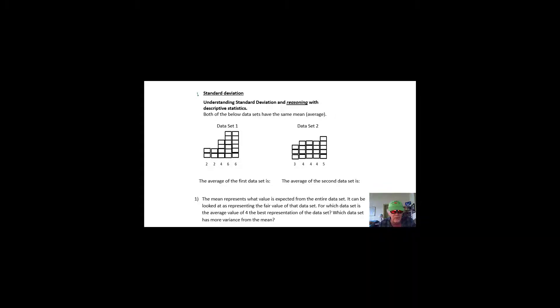Standard deviation — we're going to try to understand what it means. We have two data sets that both have the same average. To find the average of data set one: 2 plus 2 plus 4 plus 6 plus 6 divided by 5. That's 20 divided by 5, which is 4. So both data sets have an average of 4.